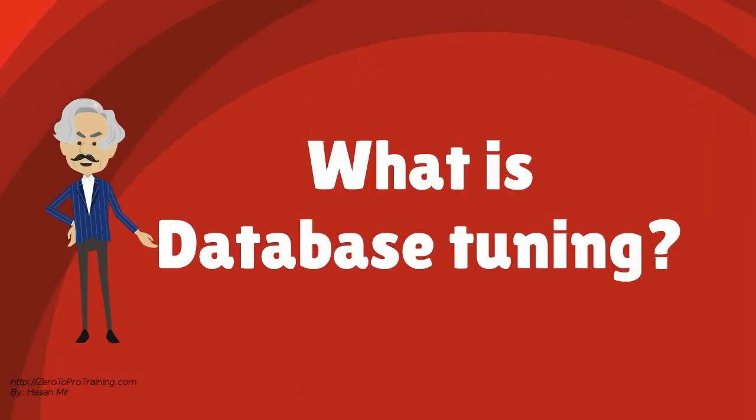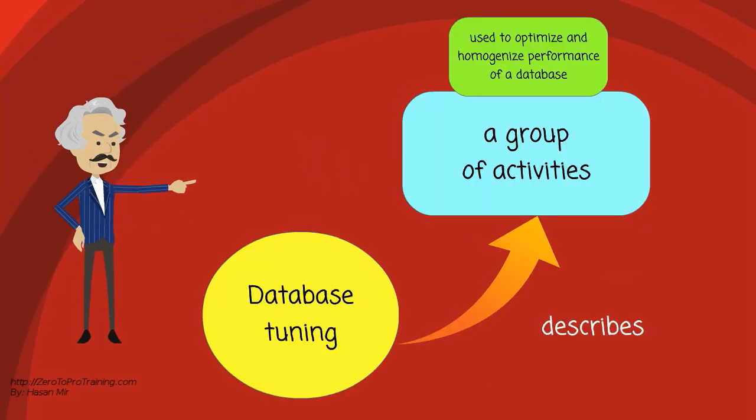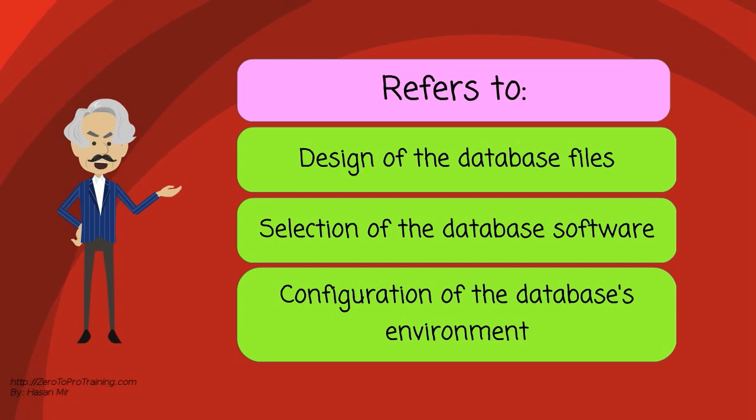What is Database Tuning? Database Tuning describes a group of activities used to optimize and homogenize the performance of a database. It usually overlaps with query tuning, but refers to design of the database files, selection of the database software, and configuration of the database's environment, for example, operating system, CPU, etc.